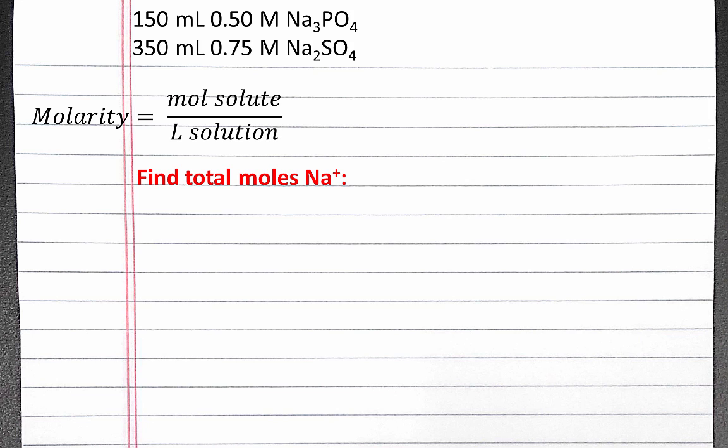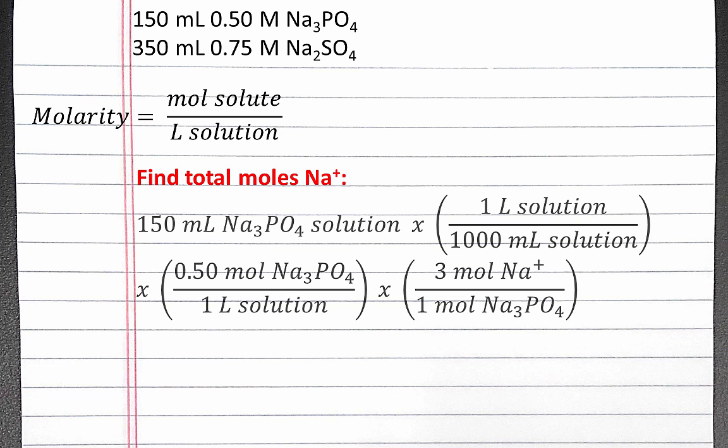The first thing we'll want to do is find the total moles of sodium ions. We can use dimensional analysis to convert between the volume of sodium phosphate solution and the moles of sodium ions, starting with milliliters of solution.